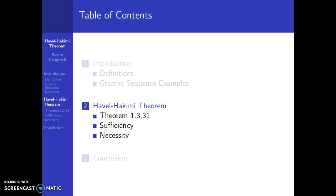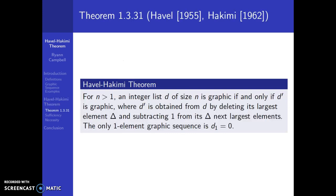Now let's dive into the Havel-Hakimi theorem. It states that for a number of vertices greater than 1, an integer list D of size N is graphic if and only if D' is graphic. We obtain D' from D by deleting D's largest element delta and subtracting 1 from its delta next largest elements. The only one-element graphic sequence is D1 equals 0.